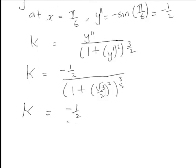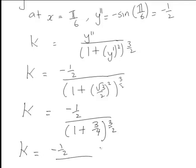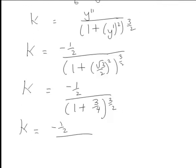That's negative 1/2 divided by 1 plus 3/4, with the whole expression on the bottom raised to the power of 3 on 2. Simplifying, that becomes negative 1/2 divided by 7/4 to the power of 3 on 2.